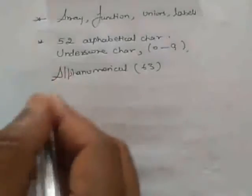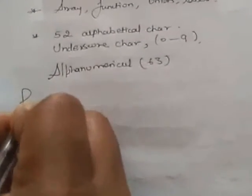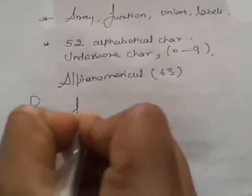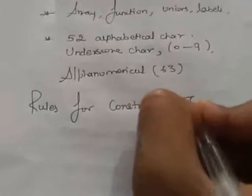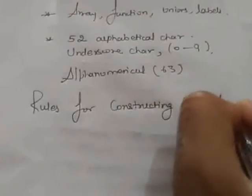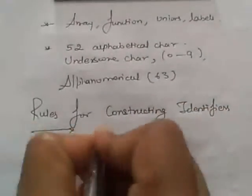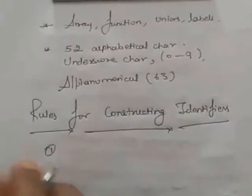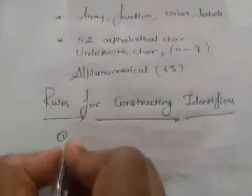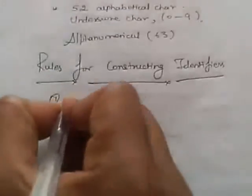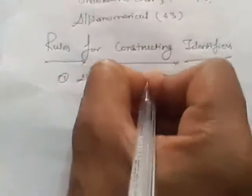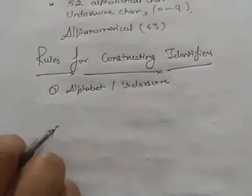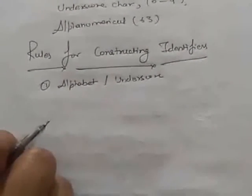We have some rules for constructing identifiers. What are these rules? Point number 1, the first character of the identifier should be either alphabet or underscore. It can be followed by any character, digit or underscore.